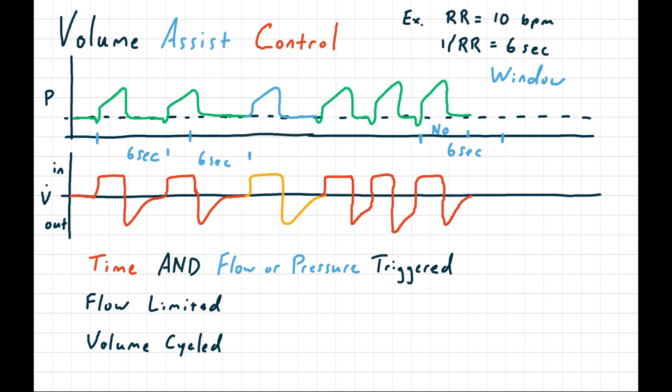That's volume assist control. Pressure assist control works exactly the same way, except that the breaths are pressure-limited breaths just like pressure control, instead of flow-limited breaths like volume control. The only difference between control, assist, and assist control modes is whether you're triggering on time, on flow or pressure, or on both. Once the breath gets started, it proceeds exactly like it would in control mode — the limit is the same, and the cycle is the same.